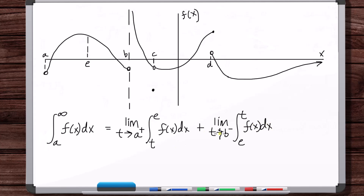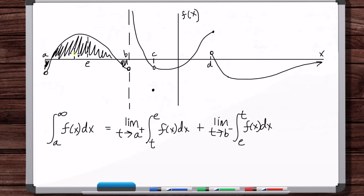With these two integrals, we've got the net area — this area minus the areas below the x-axis — the net area from a to b, which is what we want. That's what a definite integral is.